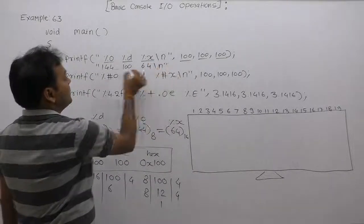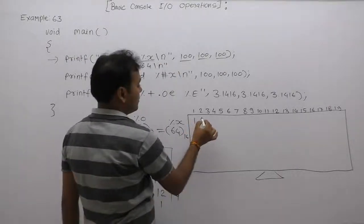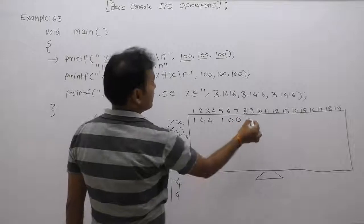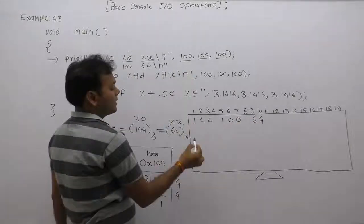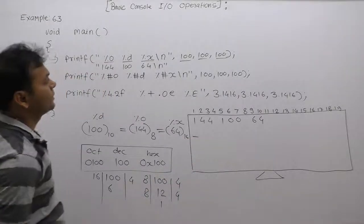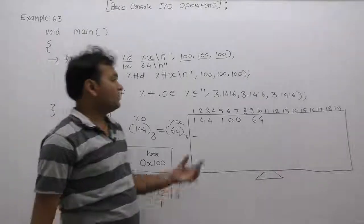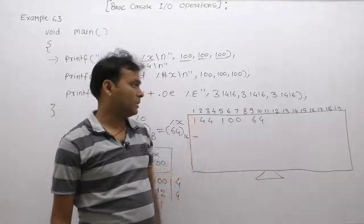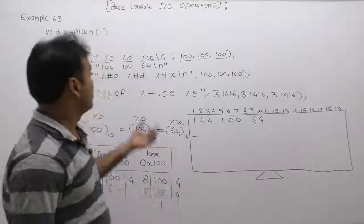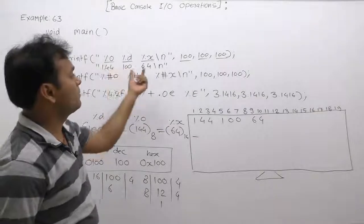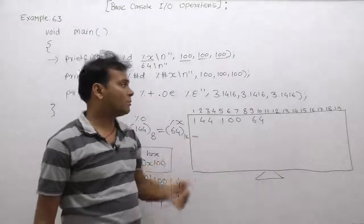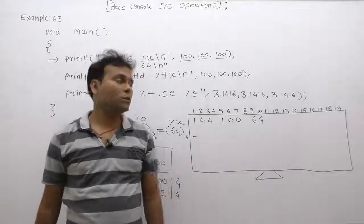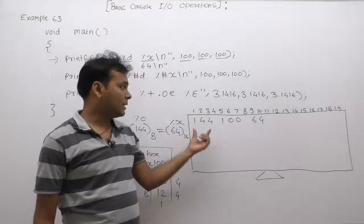So the output displayed on the monitor is: 144, space, 100, space, 64, followed by a newline. The problem here is that when we display values in different number systems, at runtime it is not easy to identify which value is in which format. From the source code we can identify: first value is in octal, second is decimal, third is hexadecimal — but at runtime on the monitor, it's hard to tell.